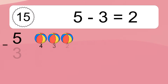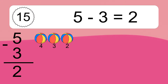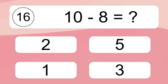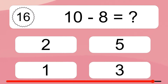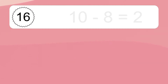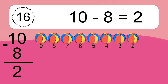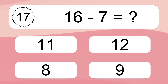5 minus 3 equals what? 5 minus 3 equals 2. Let's count it. 4, 3, 2. 10 minus 8 equals what? 10 minus 8 equals 2. Let's count it. 9, 8, 7, 6, 5, 4, 3, 2.